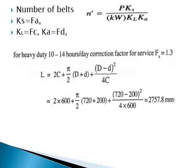For the number of belts, the formula is: i = P·Ks / (Kw·Kl / Ka). The compensating factors include Ks (load factor) and Kd (dynamic factor). The correction factor for service fa = 1.3, corresponding to 10 to 14 hours per day operation.